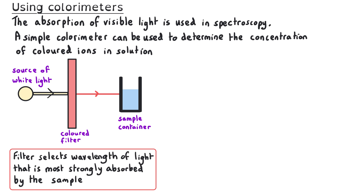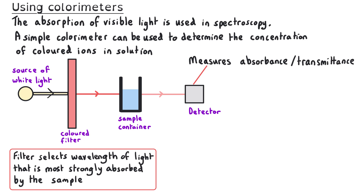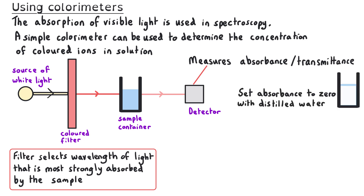Different concentrations of the blue sample will give a different absorbance of the red light. After the light has passed through the sample it hits a detector, which gives a graph of absorbance versus the concentration of the sample. To ensure the absorbance is only due to the sample, we set the absorbance to zero using distilled water in a sample container before measuring the absorbance of the specific sample.